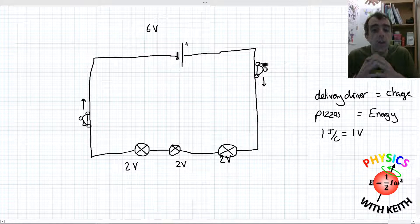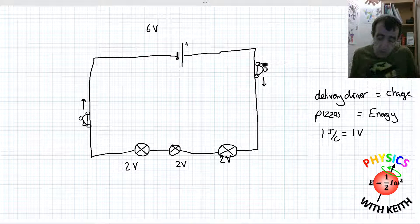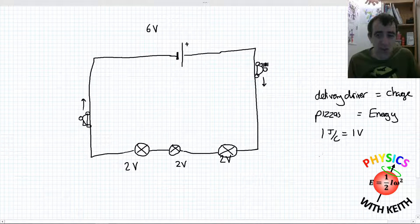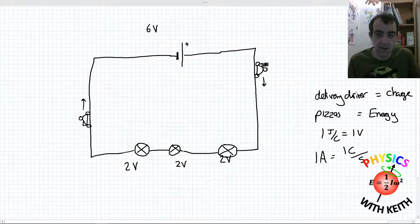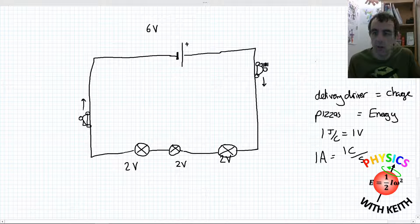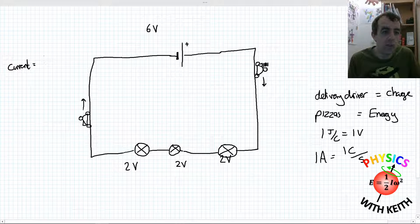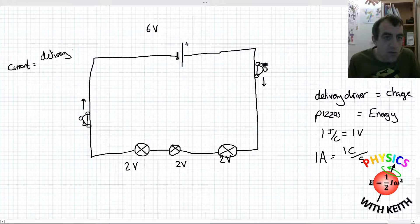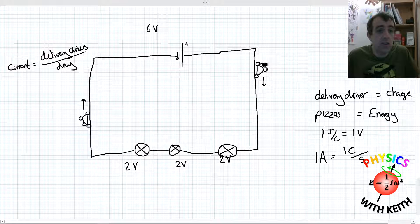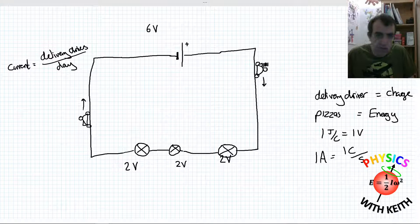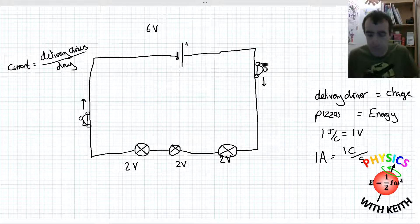In the analogy I said we are releasing one delivery driver per day — that's what the current is. One ampere is one coulomb of charge per second being delivered from the power supply. The current is the number of delivery drivers per day, and in our circuit it is the amount of charge per second. 'Day' and 'second' are just units of time, and delivery drivers represent our charge.